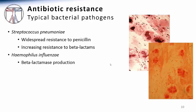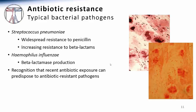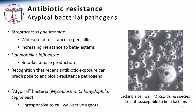Haemophilus influenzae, another common respiratory pathogen, often makes a beta-lactamase that confers resistance to many penicillin-type antibiotics. If patients have been taking antibiotics for other reasons prior to the onset of pneumonia, this recent antibiotic exposure can also predispose them to lung infections with antibiotic-resistant pathogens. Also, many atypical bacterial lung pathogens such as mycoplasma, chlamydophila, and legionella are unresponsive to cell wall active antibiotics such as the beta-lactams.